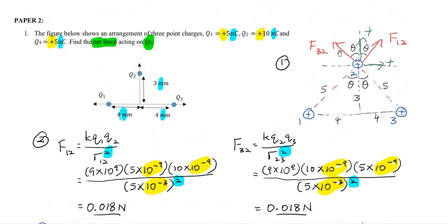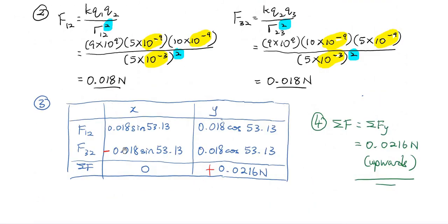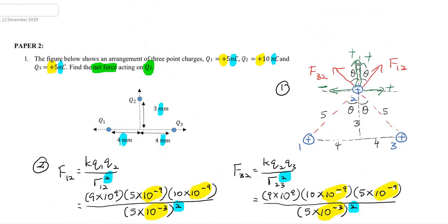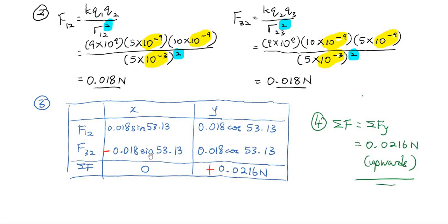For F32, the direction is to the left, so the X component is negative. It is also going upward, so the Y component is positive. Again, because the angle is measured from the Y component, Y component is cos theta and X component is sin theta. So the X components of both forces cancel each other and become zero, while the Y components add up.